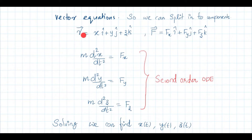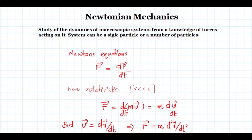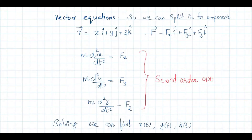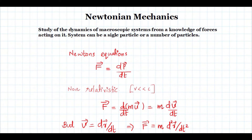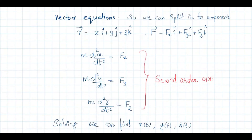In three-dimensional space this vector equation can be split into three components. The position vector r equals x î + y ĵ + z k̂, and force F equals Fx î + Fy ĵ + Fz k̂. So the vector equation gives three component equations: m·d²x/dt² = Fx, m·d²y/dt² = Fy, m·d²z/dt² = Fz. All are second order ordinary differential equations. Solving these gives x, y, and z as functions of time t.